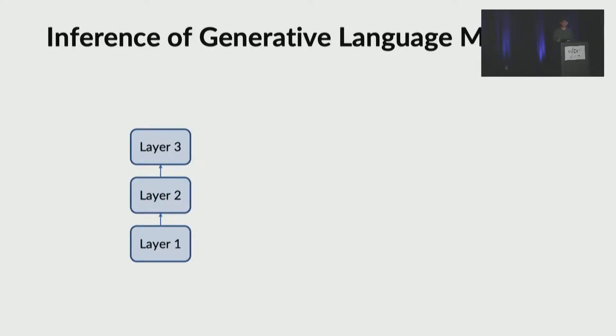To start, let me first explain how the inference in generative language models works. For simplicity, let's assume we have a decoder-only model with three transformer layers, simply denoted here as layers. We'll also exclude the embedding layer and language model head for simplicity in the figure. Now, we'll assume that the user gives some input, I think this, to the model.